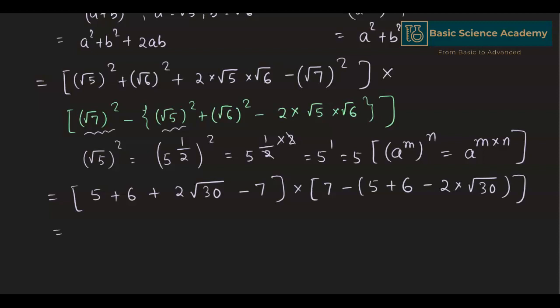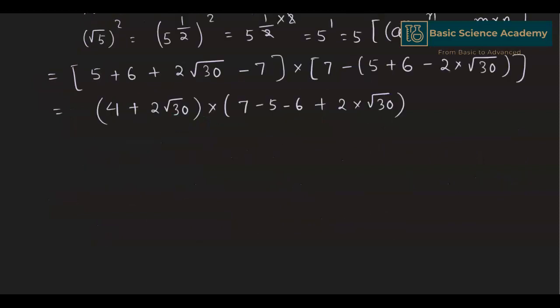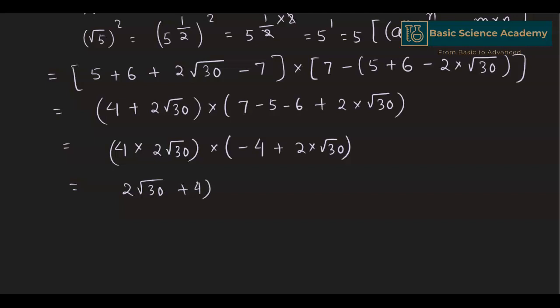This simplifies to (4 + 2√30) multiplied by (7 - 11 + 2√30), which is (4 + 2√30) multiplied by (-4 + 2√30). We can rewrite this as (2√30 + 4) multiplied by (2√30 - 4).